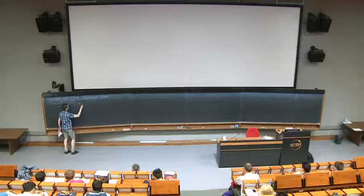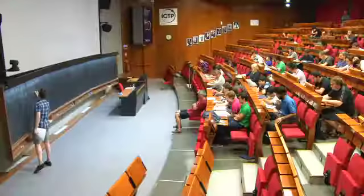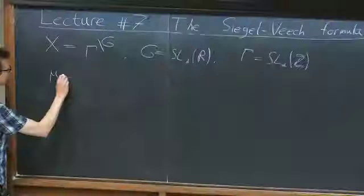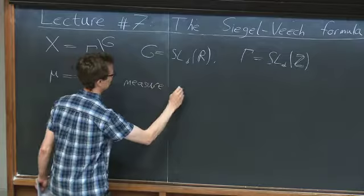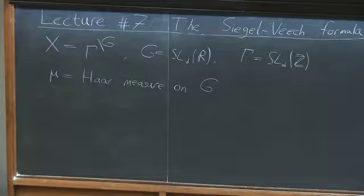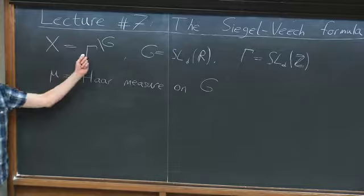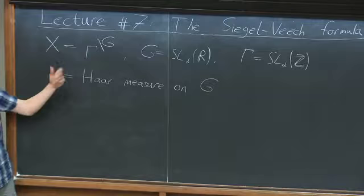We will use the same notation as before: X is the homogeneous space G mod Γ, where G equals SL(d,ℝ) and Γ is SL(d,ℤ). μ is our Haar measure on G, which is both left and right invariant. We normalize it so that it gives measure one to any fundamental domain of Γ in G—in other words, it induces a probability measure on this homogeneous space.